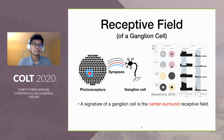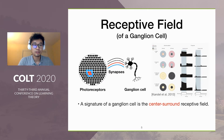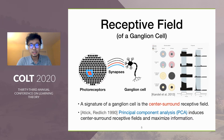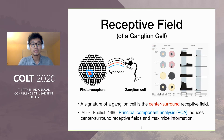A key signature of ganglion cells empirically is a center-surround structure of receptive field. This means that the receptive field of ganglion cells has a concentric structure, where the center photoreceptor will tend to excite the ganglion cell, and the surround photoreceptor will inhibit the ganglion cell, or vice versa. The seminal work of Arctic and Redlich showed that the principal component analysis-like solution can produce the center-surround receptive field and maximize the information in the retina, matching the experimental observation and suggesting that PCA could be a candidate computational problem done by the retina.